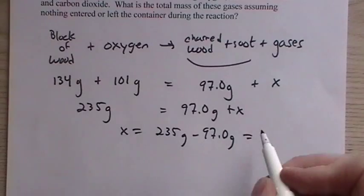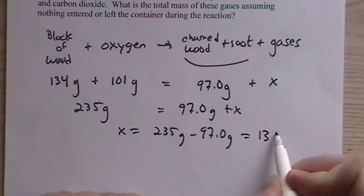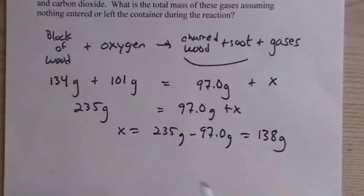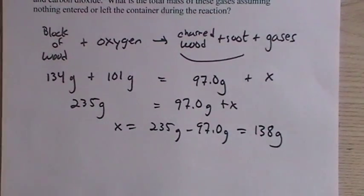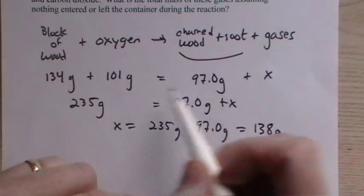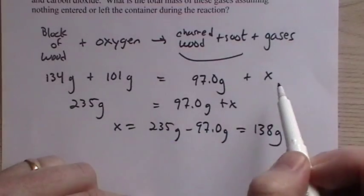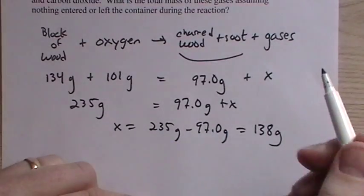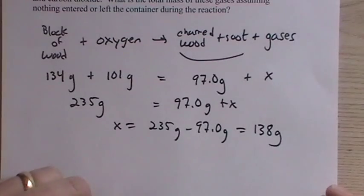And we have 138 grams for the gases. So applying the law of conservation of mass, we're given everything except for one species and we can solve for it. That's what's going to happen in all of these types of problems.